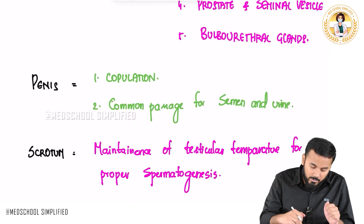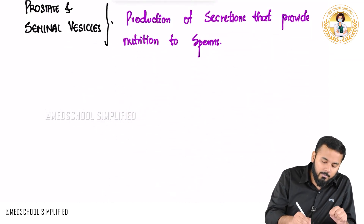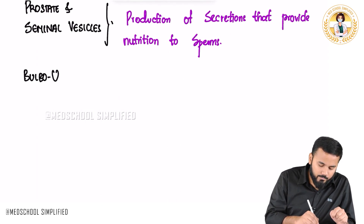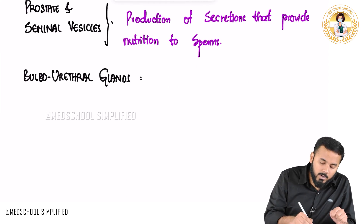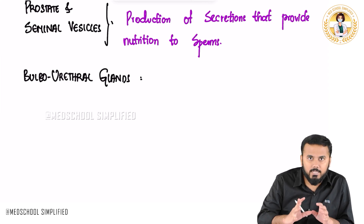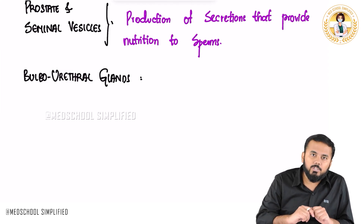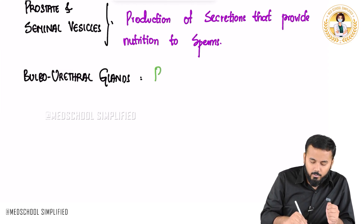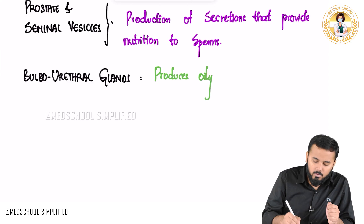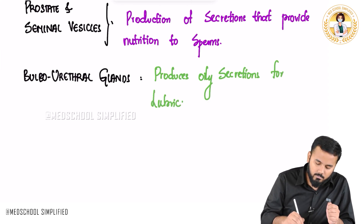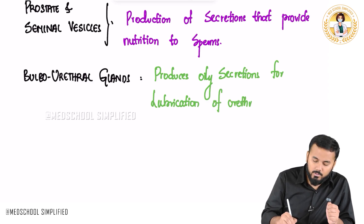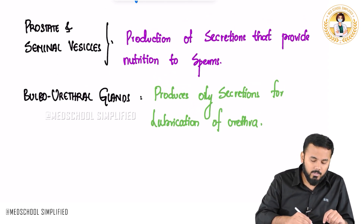The last important part is the bulbourethral glands. These bulbourethral glands release some oily secretions, and these are responsible for the easy lubrication of the penis or the urethra. When there is easy lubrication of the urethra, it would be easy during copulation to penetrate the penis into the vagina. So it produces oily secretions for lubrication of the urethra.